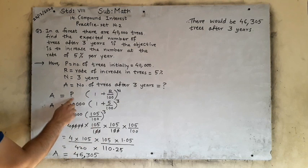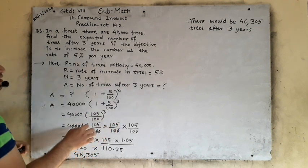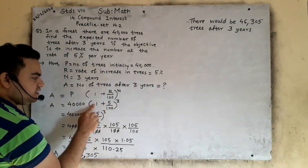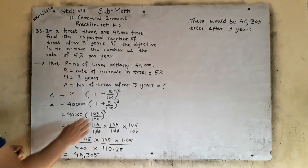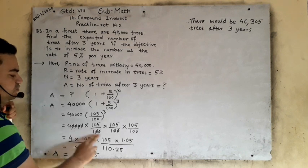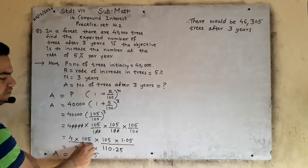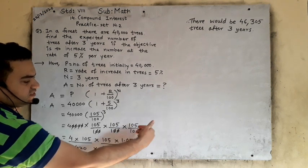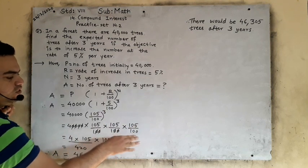Now we will keep the values. Principal 40,000, then (1 + 5 upon 100) raised to 3. We will solve the bracket first: 100 + 5 gives 105 upon 100, raised to 3. We will write 105 upon 100 three times and cancel the zeros. We can write 105/100 as 1.05 because the denominator is 100, so after 2 digits there will be a decimal point. Now multiply 2 by this — the answer will come 420. Then multiply those two.